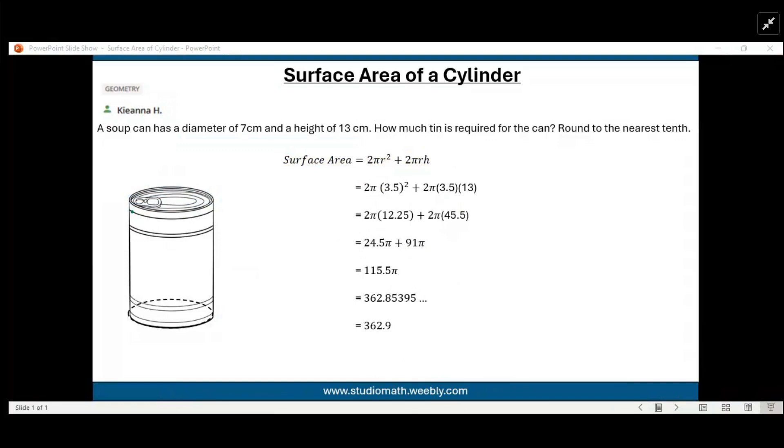A soup can has a diameter of 7 centimeters and a height of 13 centimeters. How much tin is required for the can? Round to the nearest tenth.